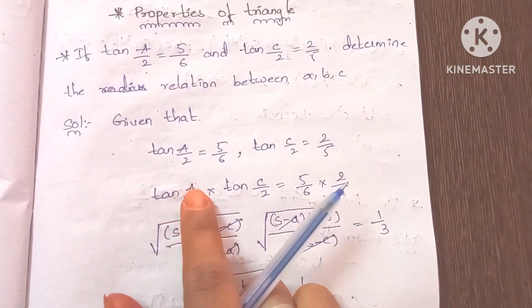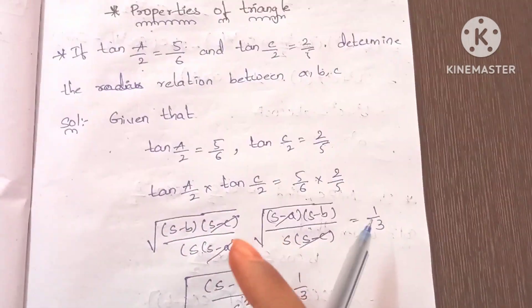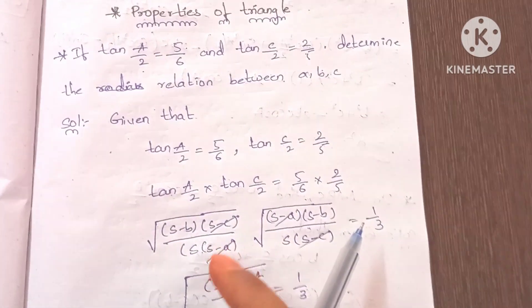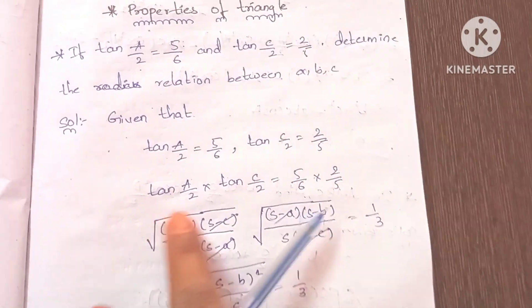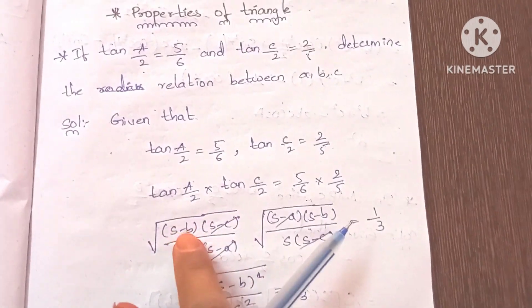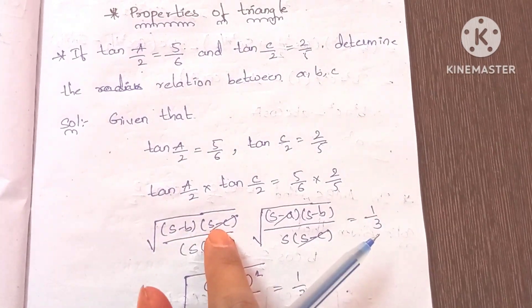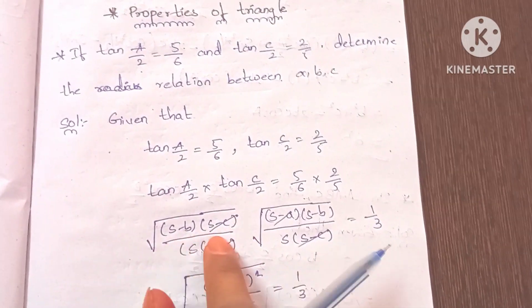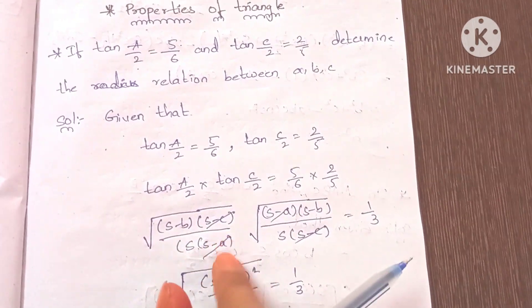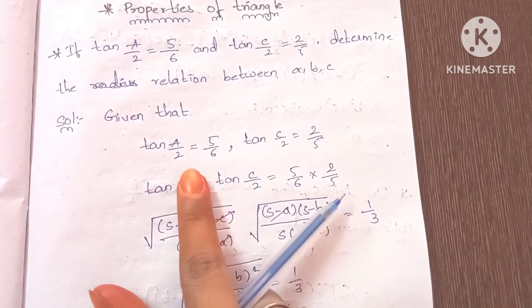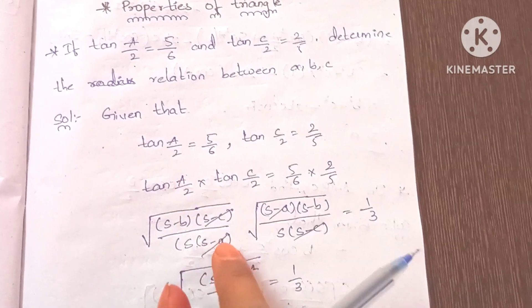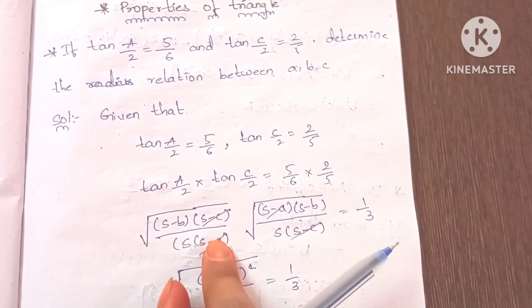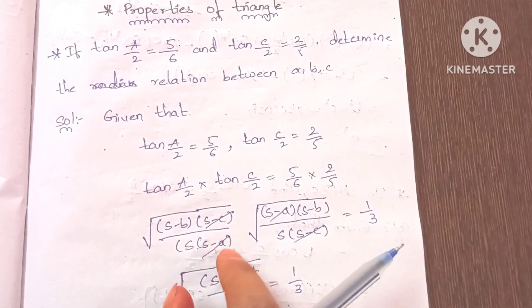Now we have the formula for tan(A/2) from properties of triangle: the square root of (s-b)(s-c) divided by s(s-a). So here we have the denominator in the numerator.